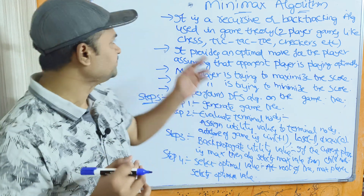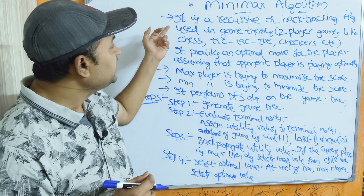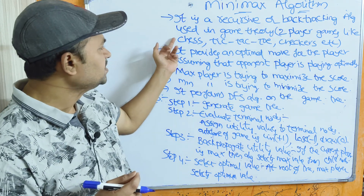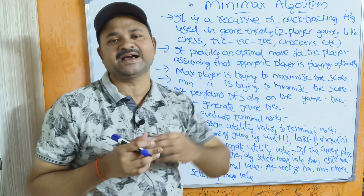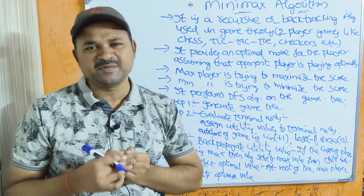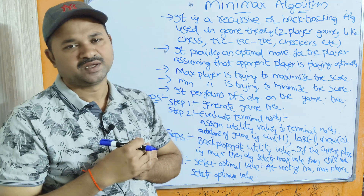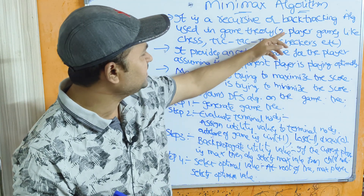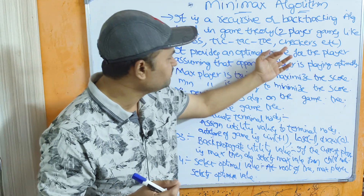Let us discuss the Minimax algorithm in artificial intelligence. Minimax algorithm is a recursive or backtracking algorithm used in game theory. It is mainly used in two-player games like chess, tic-tac-toe, and checkers.